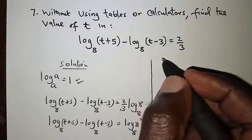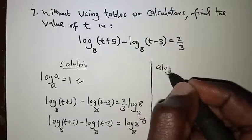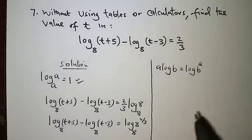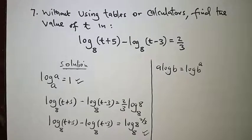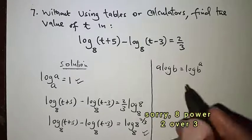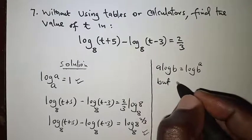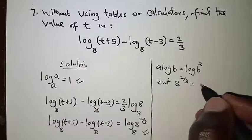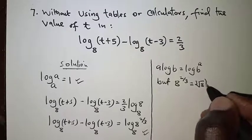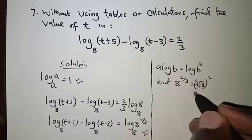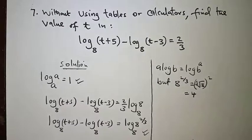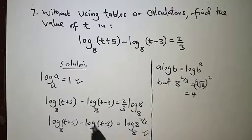The law applied is: a·log b can be written as logarithm of b raised to a. Concentrating on the power 2/3, we also need to remember that 8^(2/3) is the same as the cube root of 8, raised further to the power 2. The cube root of 8 is 2, so that gives 2 squared, which is 4. So we replace 8^(2/3) with 4.